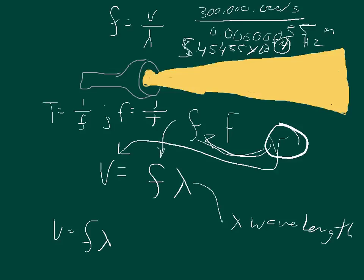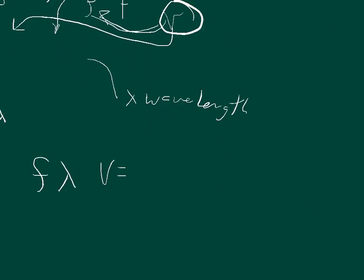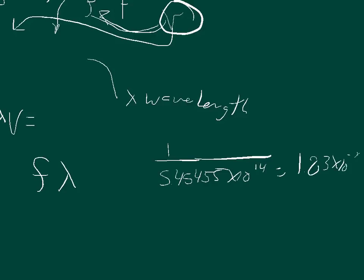So we can just take 1 and divide it by the frequency—5.45455 times 10 to the positive 14th—and that will give us the period, which is 1.83 times 10 to the negative 15th. That's all there is.